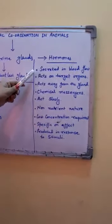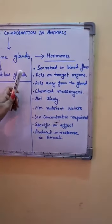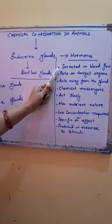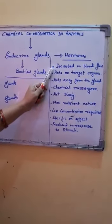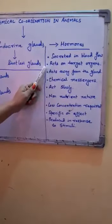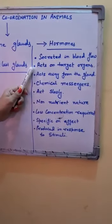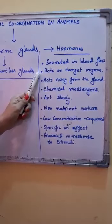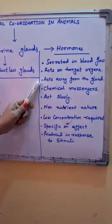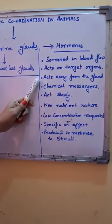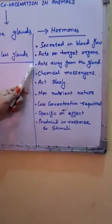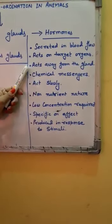Following are some characteristics of hormones. Hormones are secreted through endocrine glands which do not have any ducts, so hormones are secreted directly into the blood flow and released into the circulatory system. Hormones act on target organs — specific cells, tissues, or organs called target cells, target tissues, or target organs. Generally, these target organs are away from the glands, meaning the site of action is away from the site of synthesis.